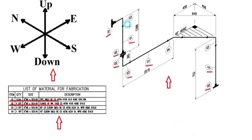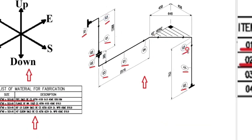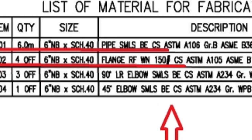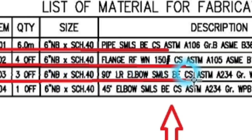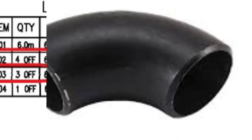Detail number 3 was used in 3 places in the pipe drawing. Looking at the material list, item number 3 has a quantity of 3 pieces: 6-inch, schedule 40, elbow, 90 degree, long radius. The material is carbon steel.